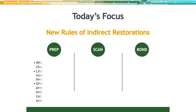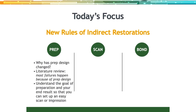Today's focus will be on the new rules of the indirect restoration. We're going to talk about three major things: the prep, the scan, and the bond. Why has prep design changed? We'll talk about what the literature says — most failures happen because of prep design. We need to understand the goal of prep design and the end result before you begin so that you can set up an easy scan or impression.